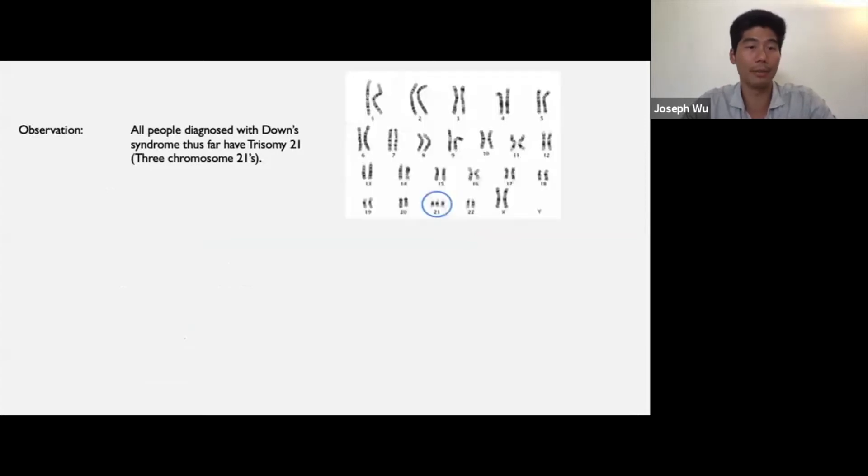Scientists use inductive reasoning all the time. Here's an observation that was once made: all people diagnosed with Down syndrome thus far have trisomy 21, which means that they have three chromosome 21s. Here's a visualization of chromosomes called a karyotype and we can see in the blue circle that this individual with Down syndrome has three chromosome 21s. Then scientists use inductive reasoning to conclude that all people with Down syndrome have trisomy 21, including those that they have not yet examined. The observation provides evidence for this conclusion.